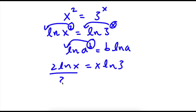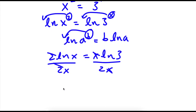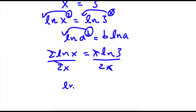Now I can divide both sides by 2x. So these will cancel out on the left side and the x's will cancel out on the right side. So now I have ln x over x is equal to ln 3 over 2.